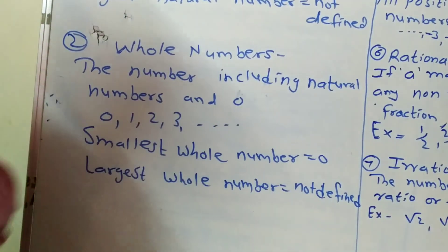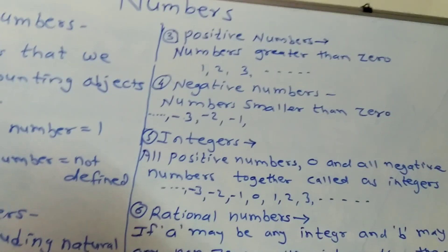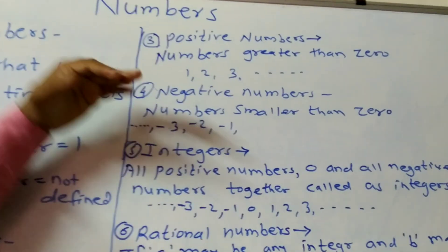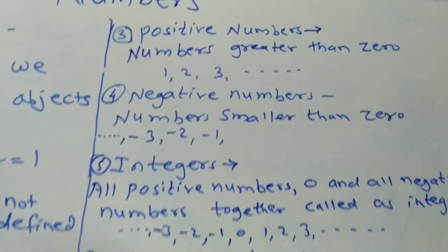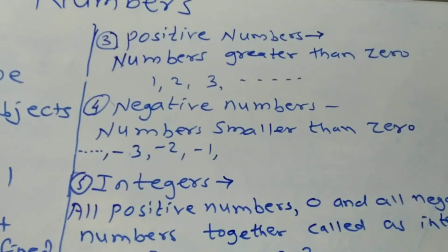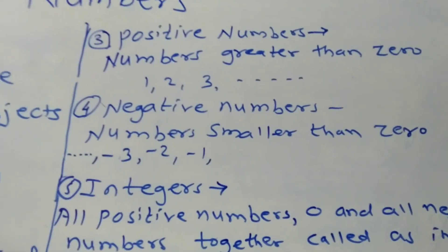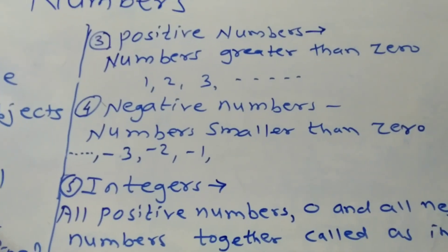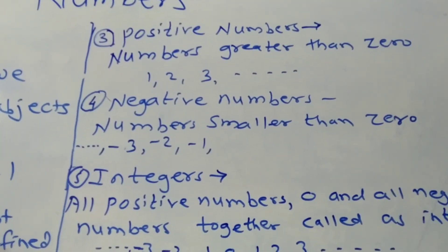The third type is positive numbers. The numbers which are greater than 0 — that is all the natural numbers 1, 2, 3, etc. — are called positive numbers.